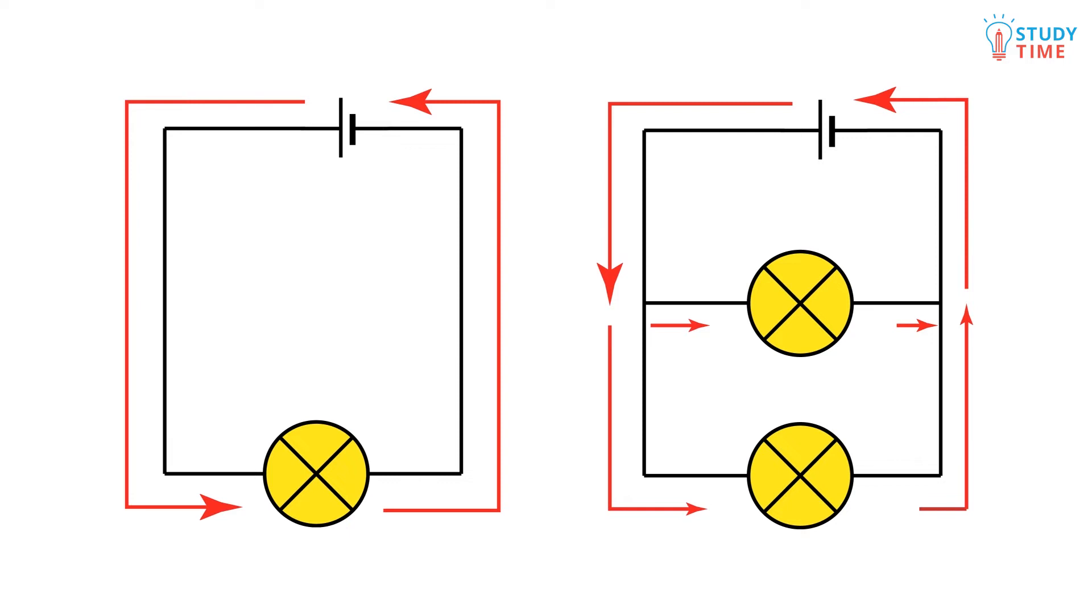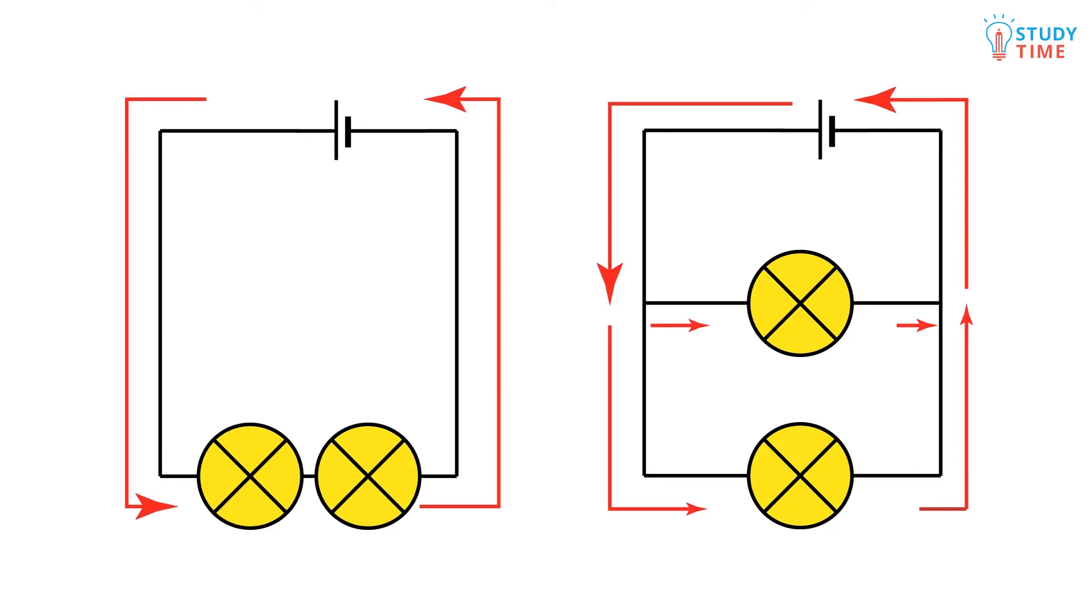But couldn't we have stuck two light bulbs into a series circuit as well? And if we did that wouldn't they both have been lit up just like in parallel? Well the answer to this question is yes. Two light bulbs can be connected in series just fine. And they're on and everything's going great for now.